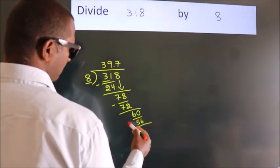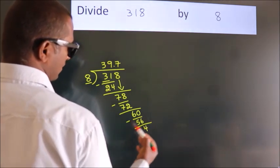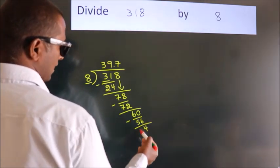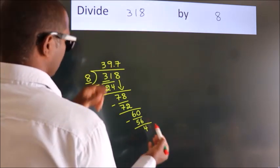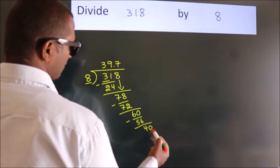Now, we subtract, we get 4. After this, we already have the decimal. So, directly take 0. So, 40.